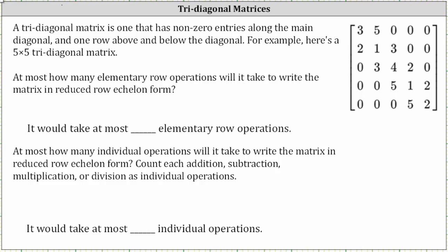A tridiagonal matrix is one that has nonzero entries along the main diagonal and one row above and below the diagonal. For example, here is a five-by-five tridiagonal matrix.